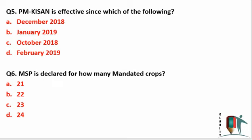Question 5: PM Kisan is effective from which date? You should remember that PM Kisan is effective from December 2018. This type of date-based question is asked in the NABARD examination every year, so you should remember the dates of many important schemes.